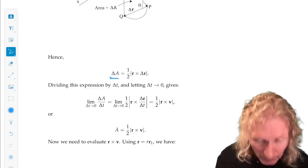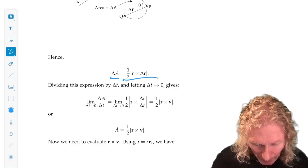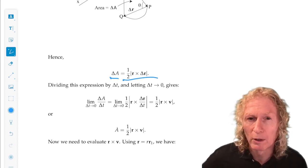The change in area as the position vector moves, the area swept out, is ½r × Δr.